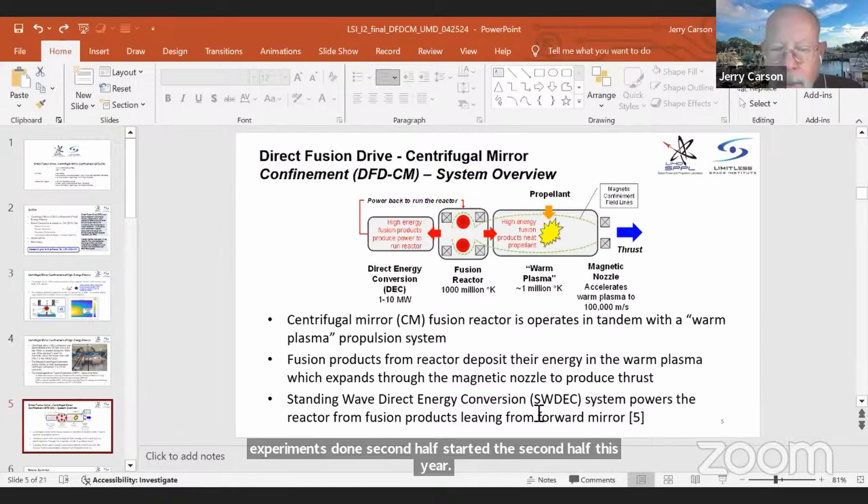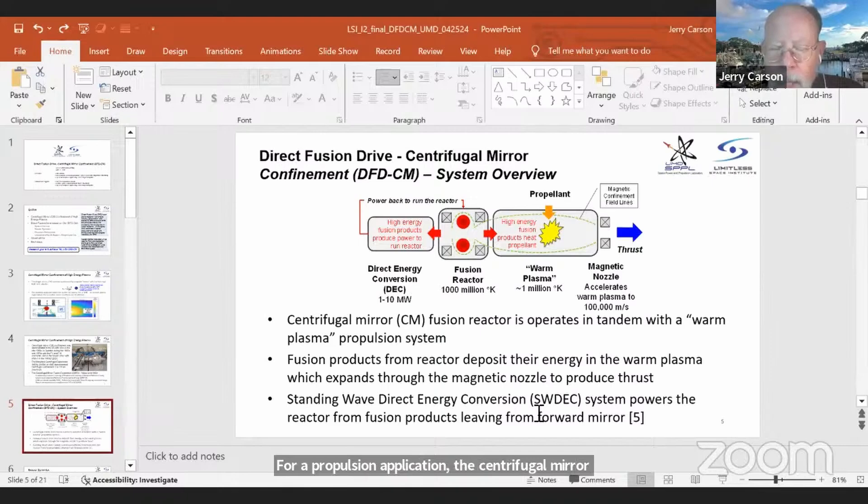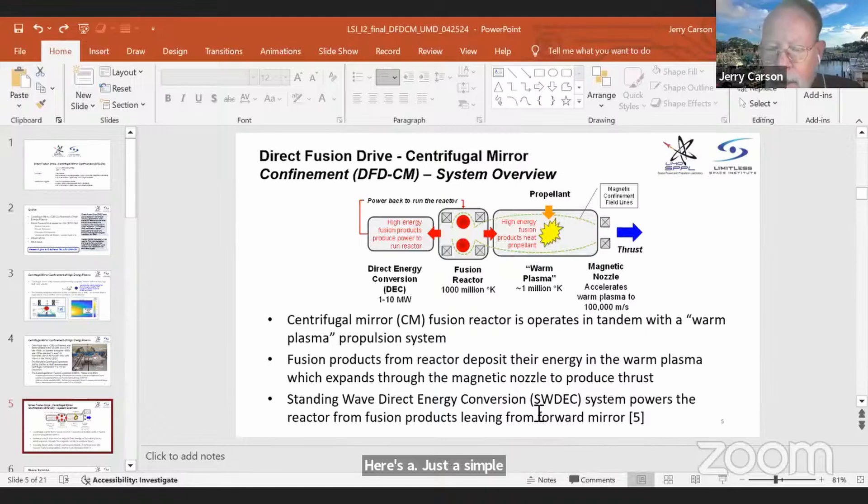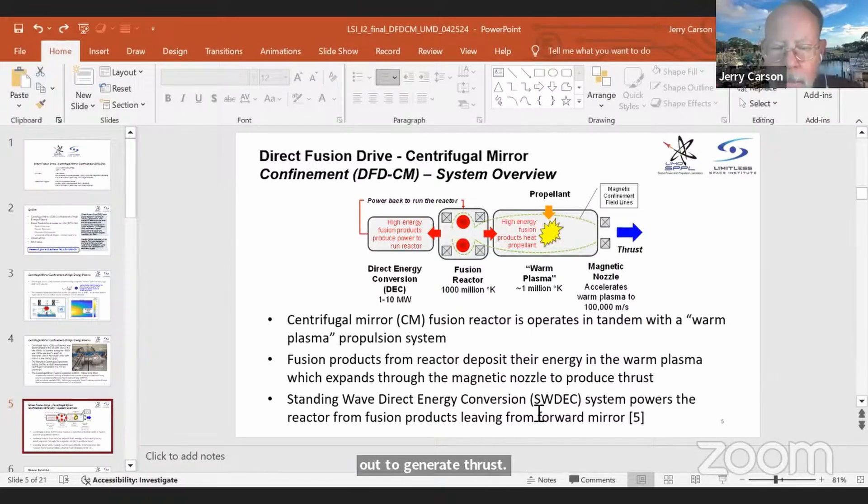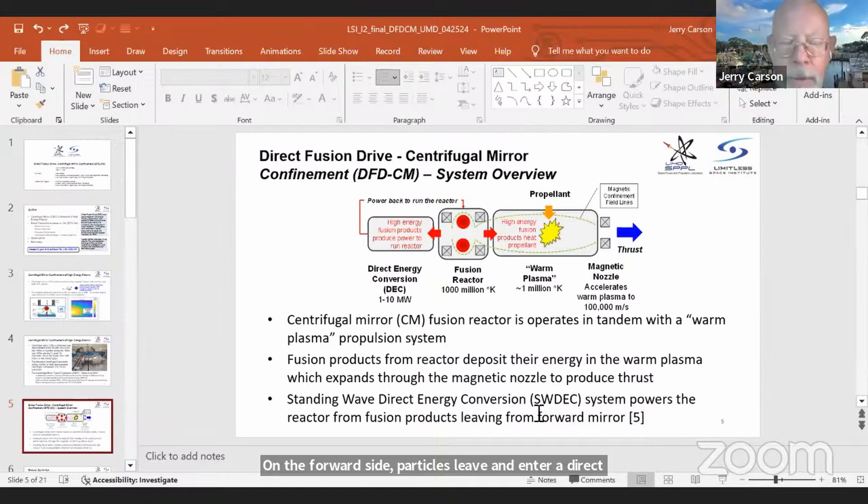For a propulsion application, the centrifugal mirror would be operated in tandem with a warm plasma propulsion system. Here's just a simple schematic of the system. We have the reactor in the middle, and particles are leaving through both sides through the mirrors. And on the jet side, the right side, they enter the propellant, heat the propellant, which then passes out to generate thrust. On the forward side, particles leave and enter a direct energy conversion system. In our case, it's a standing wave direct energy conversion system, and that produces the power to run the reactor.